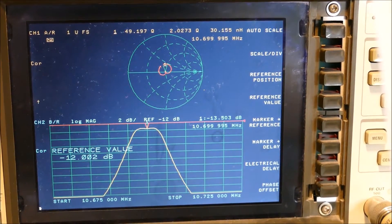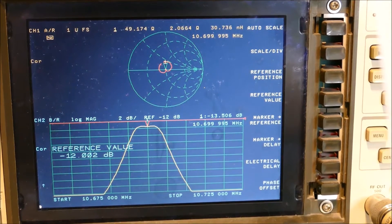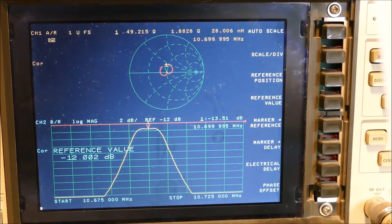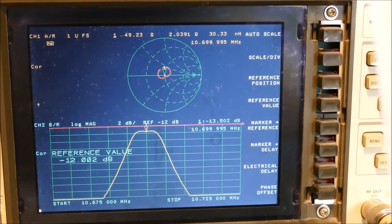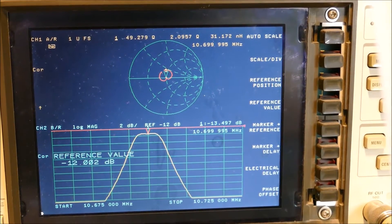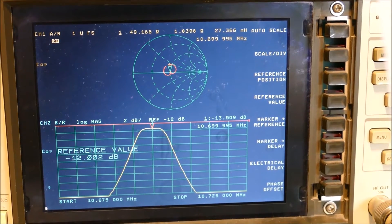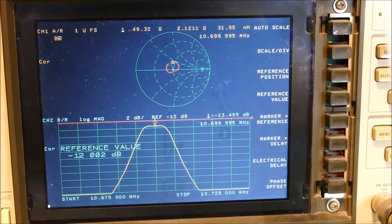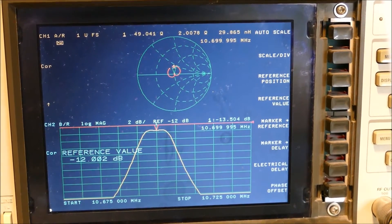And what I'll do now is pop this straight onto the Rigol DSA 815 with the tracking generator and see if we can keep that 10.7 megahertz center frequency.